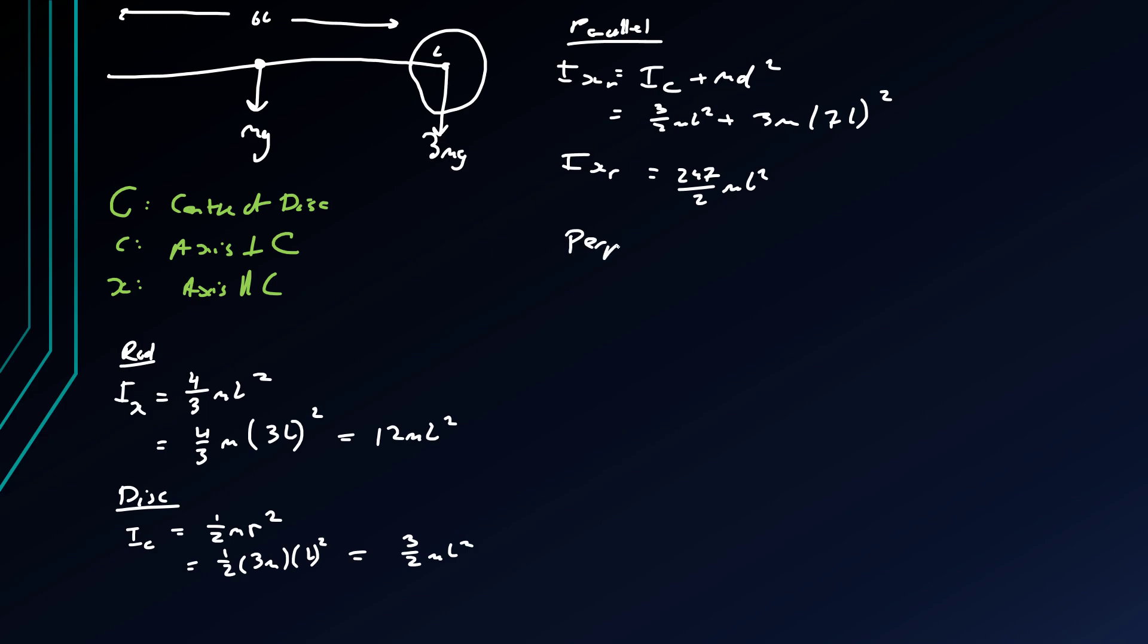Now for the perpendicular axis theorem, we can say that I of the whole thing, so of the whole object, is the moment of inertia of this rod, which is 12 ml squared, plus the moment of inertia technically of the disk sort of on its own. So it works in a way as in from the end point to the circle as it is from the circle to the end point, which we have as our 297 over 2 ml squared, which when adding is 321 over 2 ml squared, and this is the moment of inertia of the whole object.